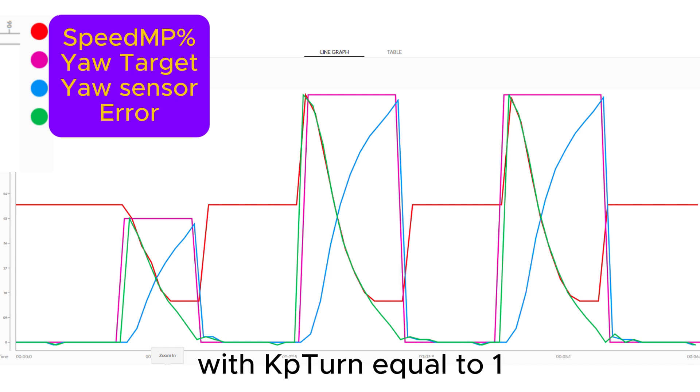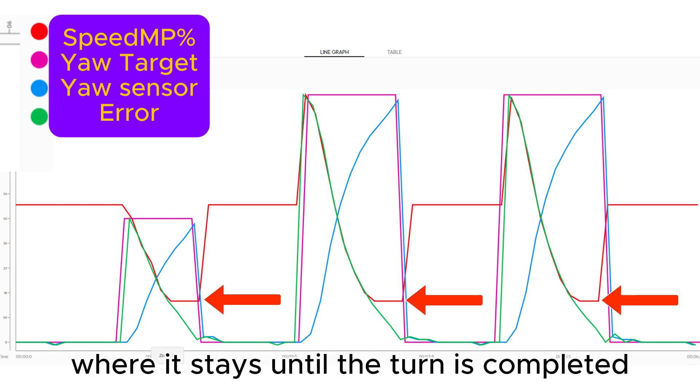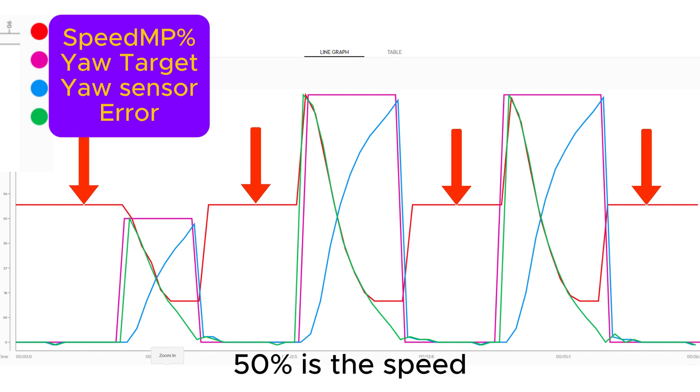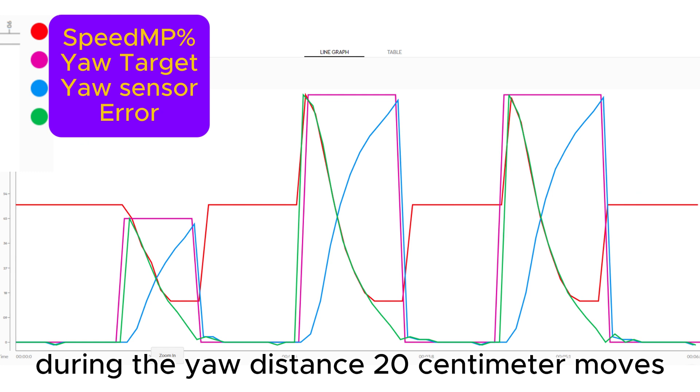With Kp turn equal to 1, the red speed curve follows the green error curve down to the MP min value of 15%, where it stays until the turn is completed. 50% is the speed during the yaw distance 20cm moves.